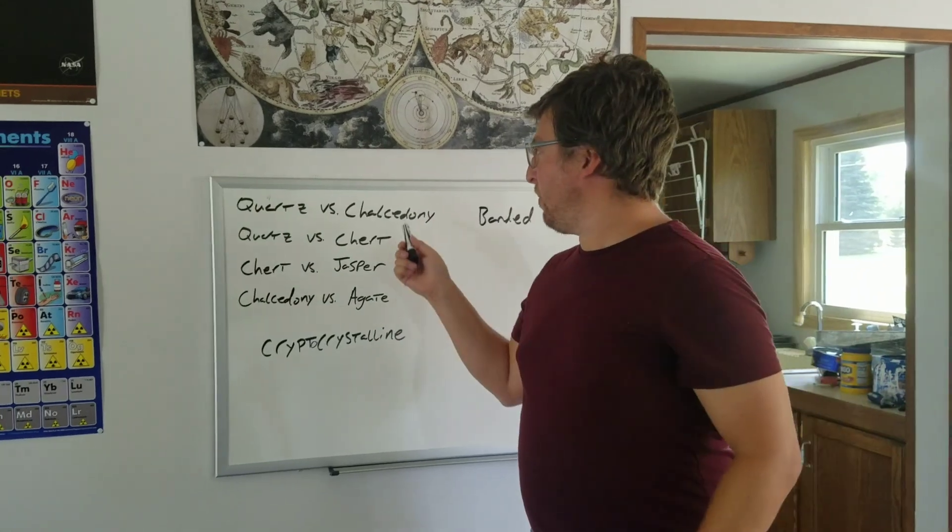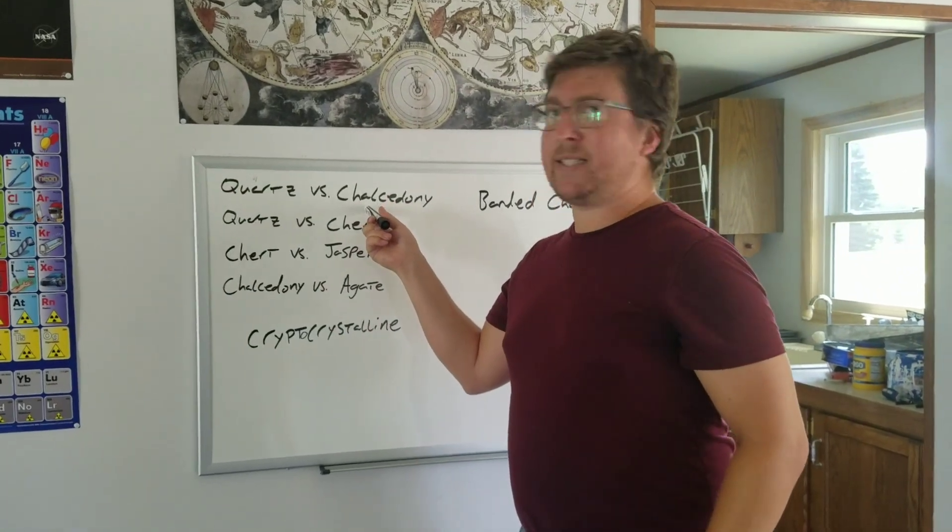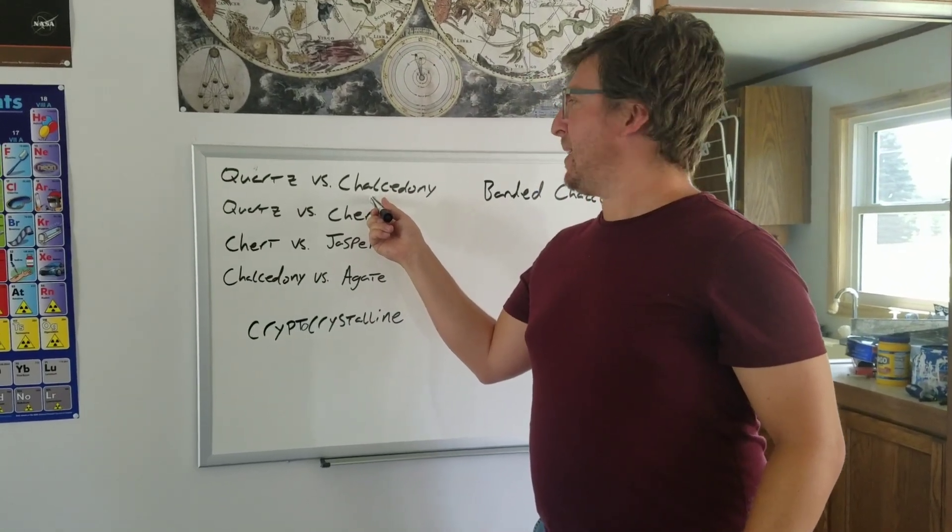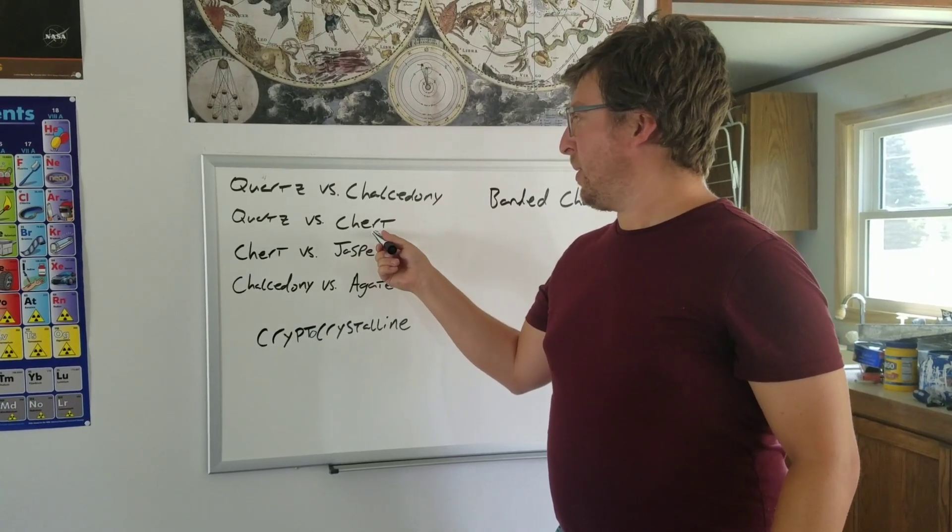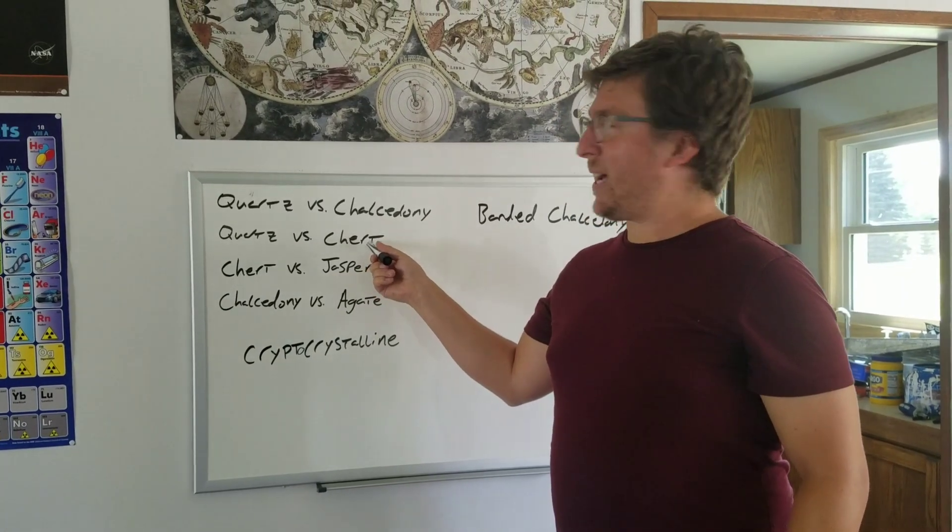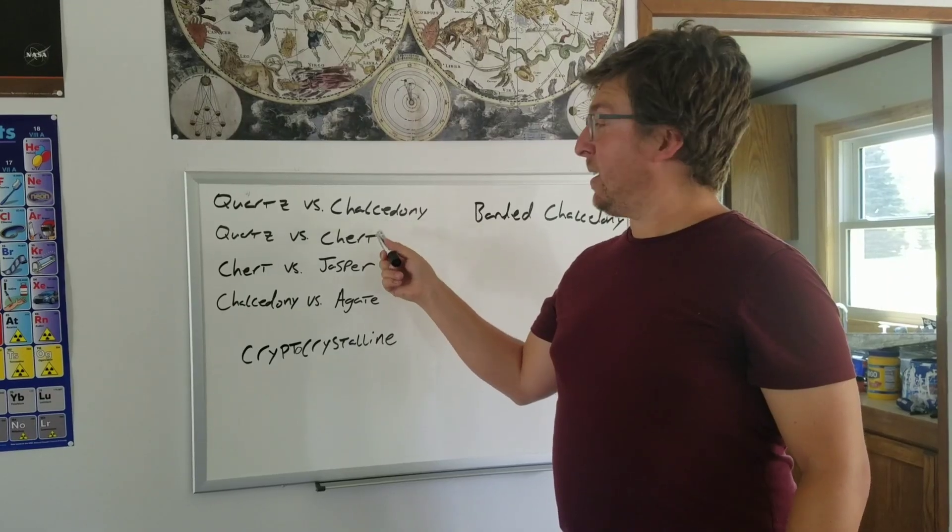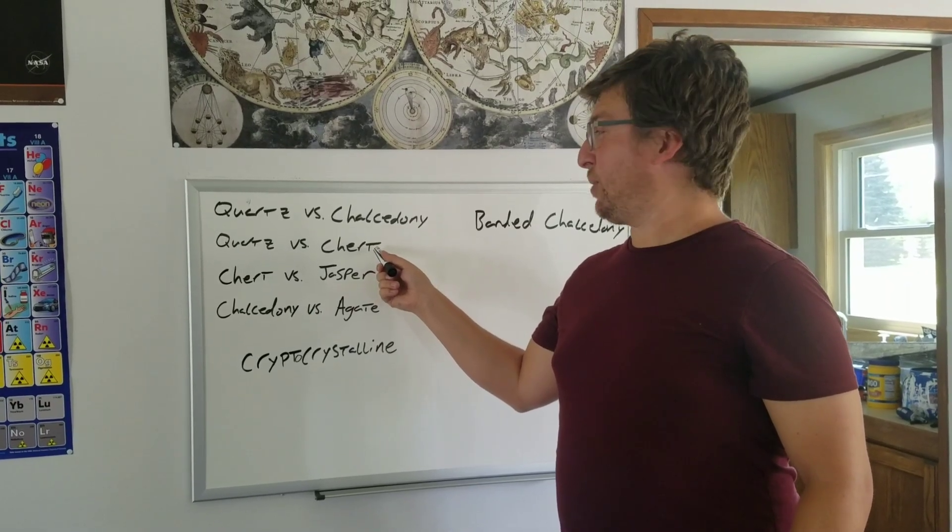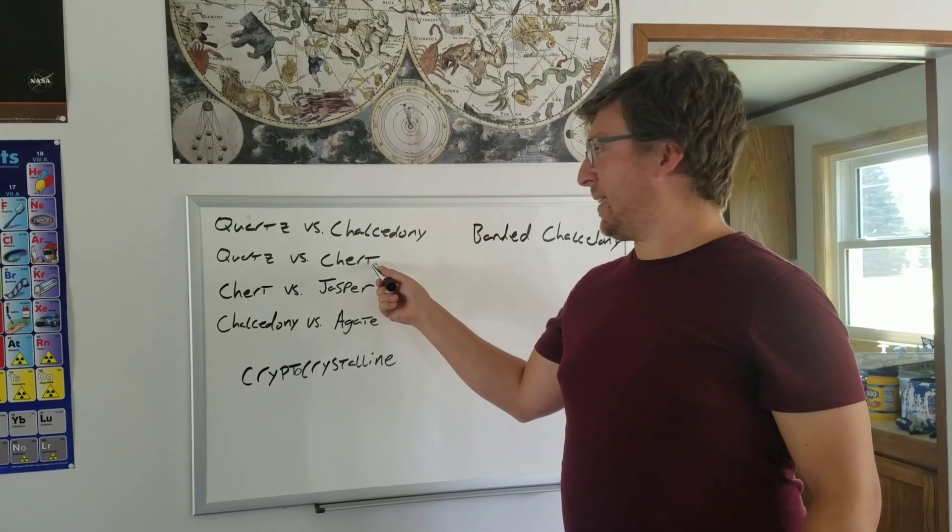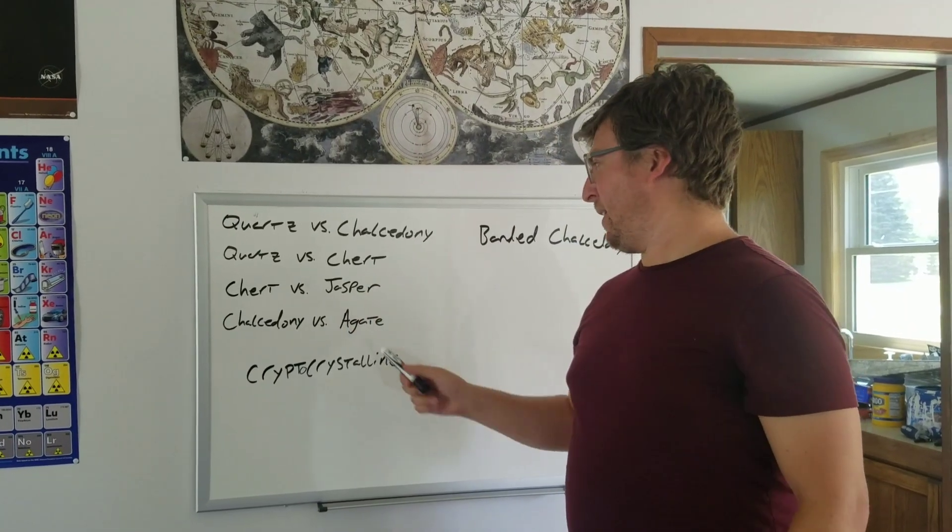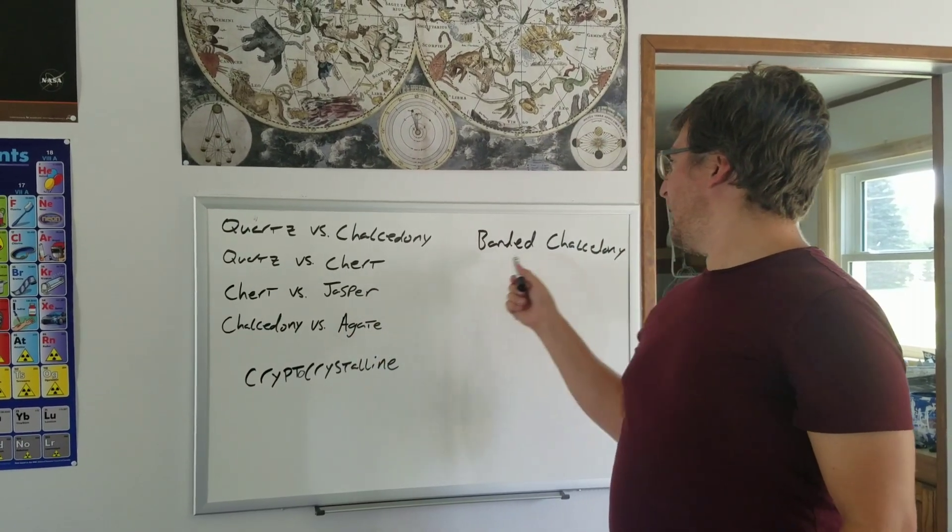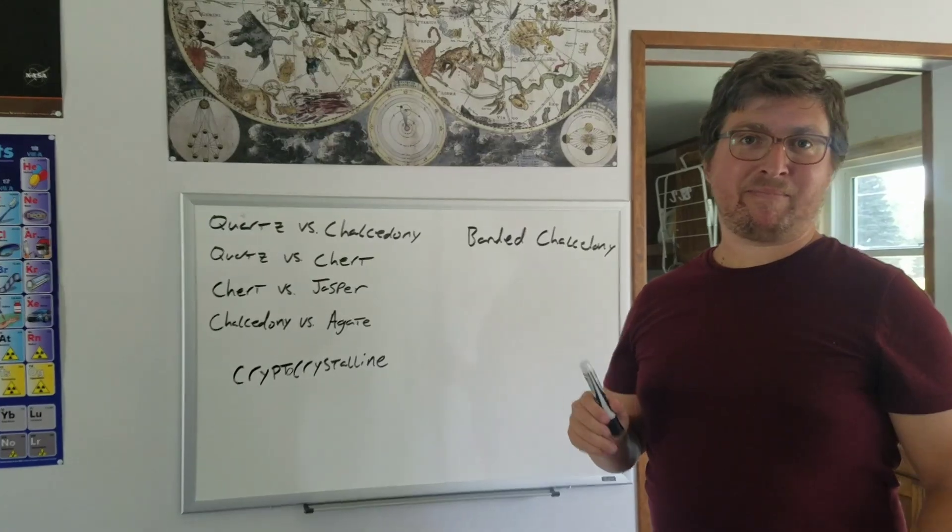For identifying them in the field, you're looking for waxy, smooth, should be at least partially translucent to light. For chert, a little bit less waxy and smooth than chalcedony, but still pretty waxy, still pretty smooth, usually does not pass light through it. Jasper, you're looking for chert, but red. And agate, you're looking for chalcedony, but banded. And that does it. I hope that helps.